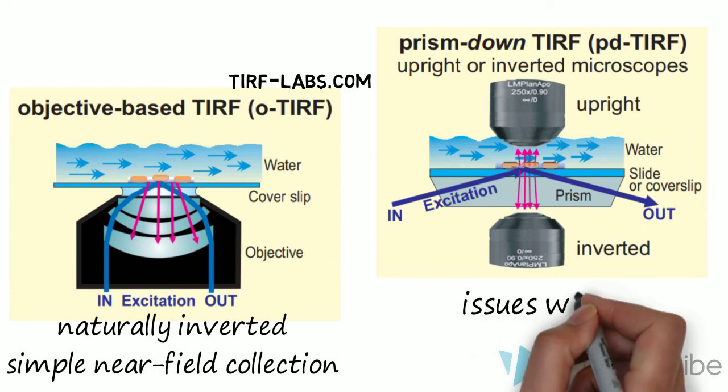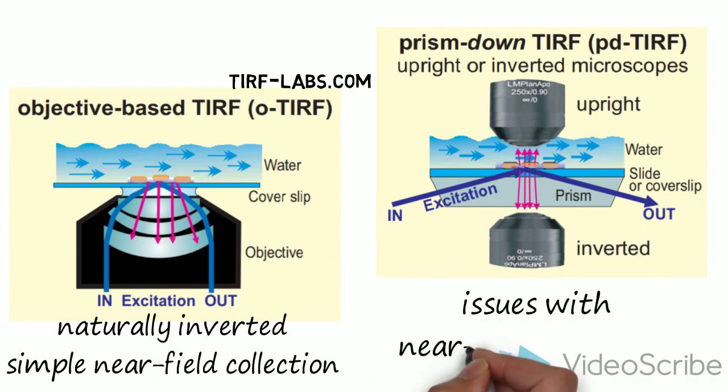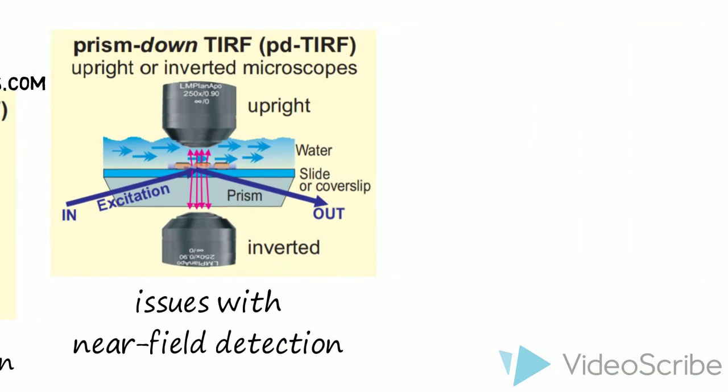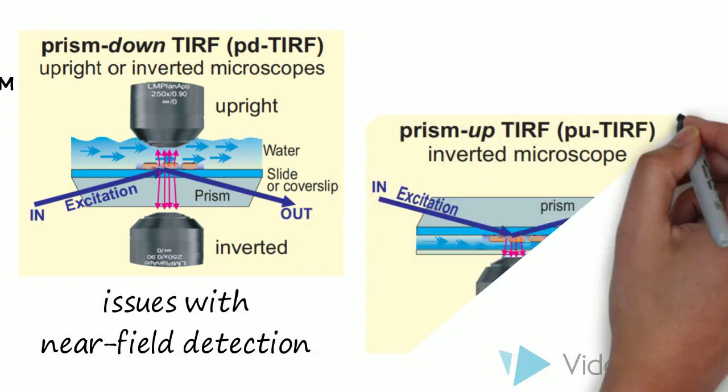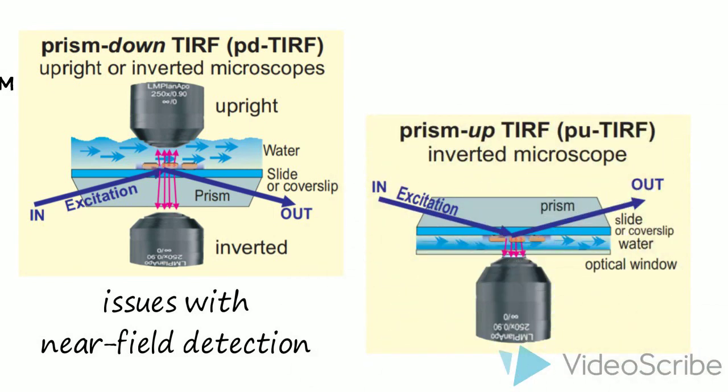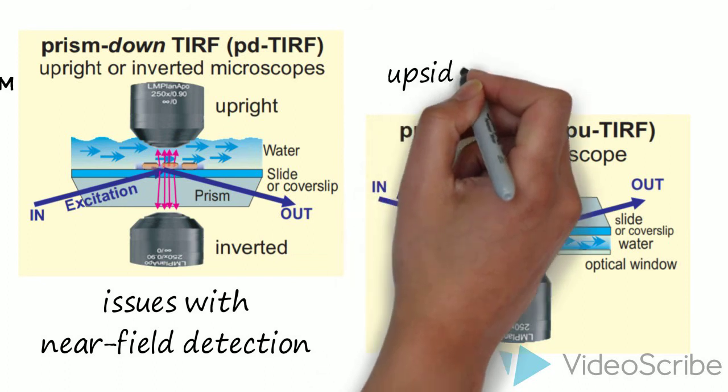Alternatively, if you want to put the objective below the system, the prism is in the way. This is going to limit near-field collection. The whole P-TIRF setup can be inverted, but when this is done, some limitations to sample preparation ensue because the sample holder is now upside down.